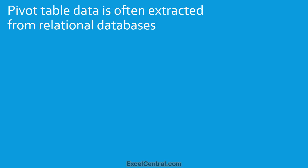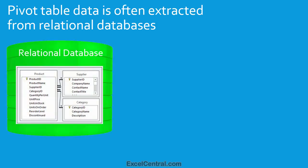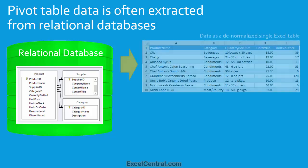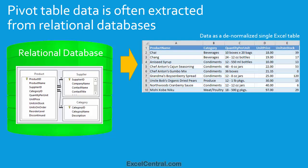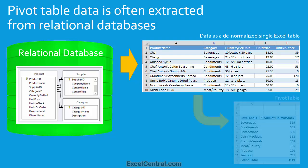Pivot table data is often extracted from a relational database. Here's a very simple example of a relational database. It has three tables: the Product table, the Supplier table, and the Category table. When you want to analyze this data using a pivot table, you'd ask your IT department to extract data from the three tables into a single data extract. The process of extracting data from multiple tables and consolidating them into a single table is sometimes called denormalizing. So you might hear this sort of table called a denormalized table. Once you have this single table extract, you'd use it to create your pivot table.